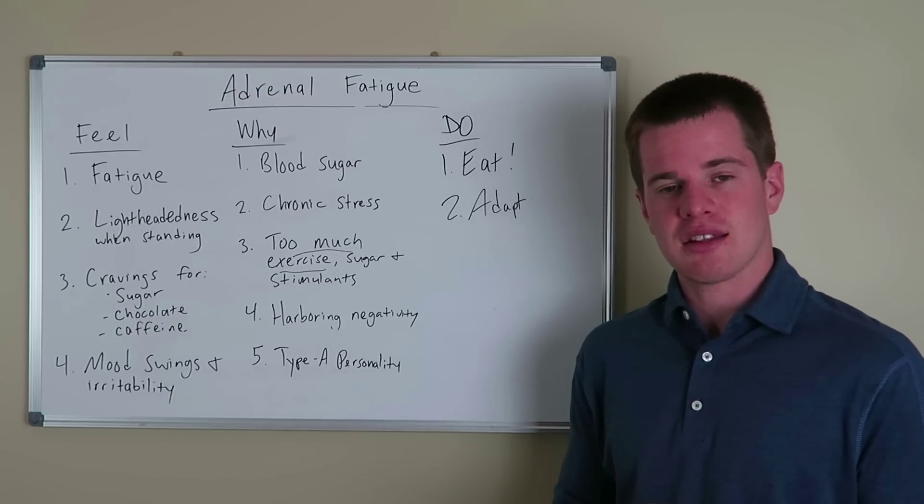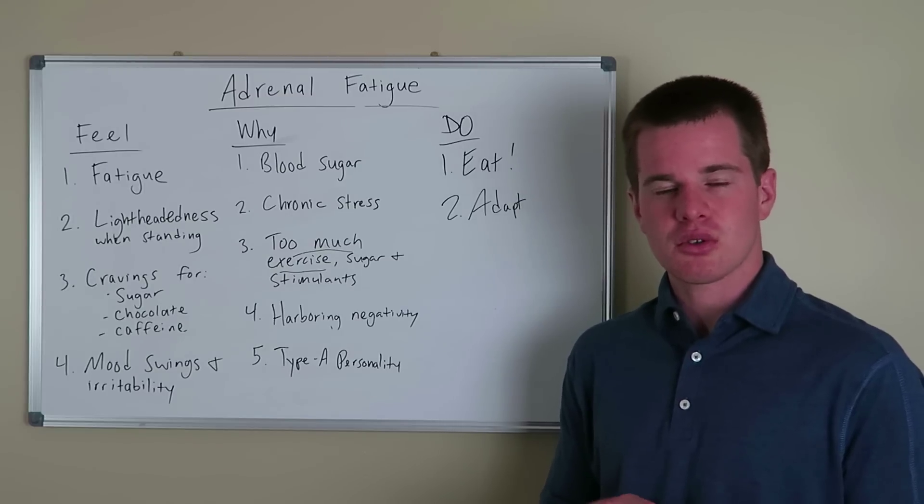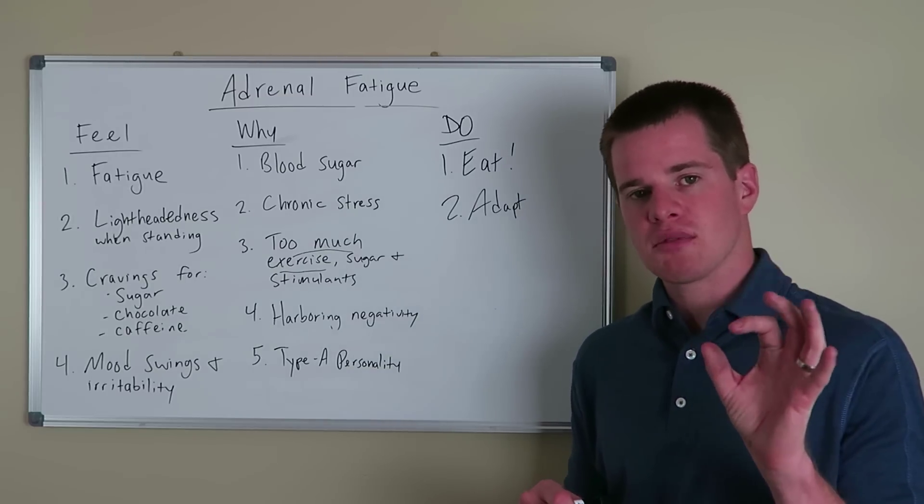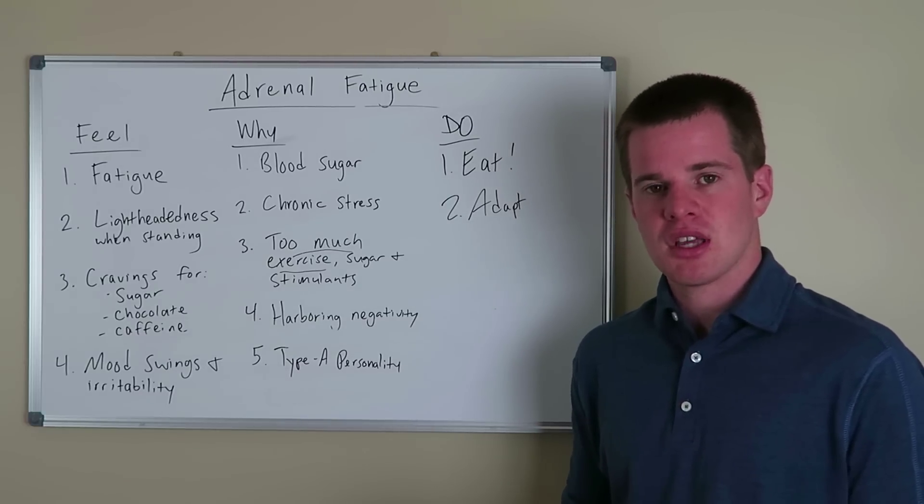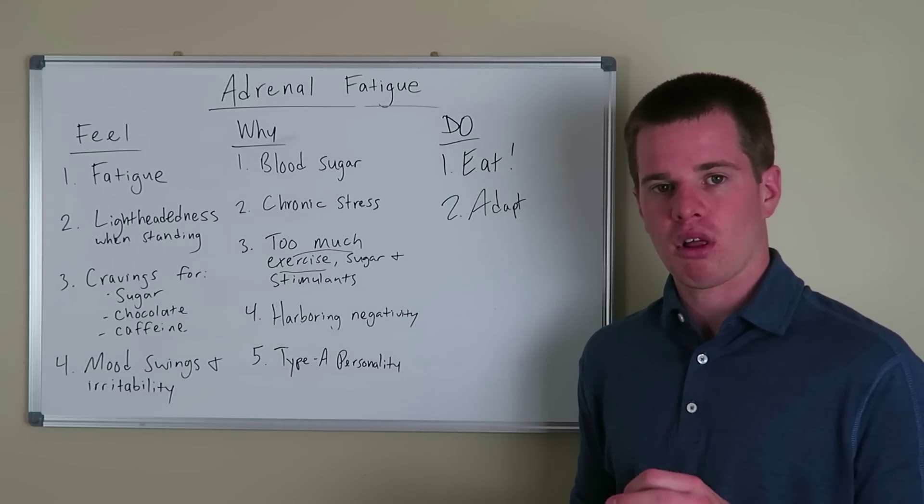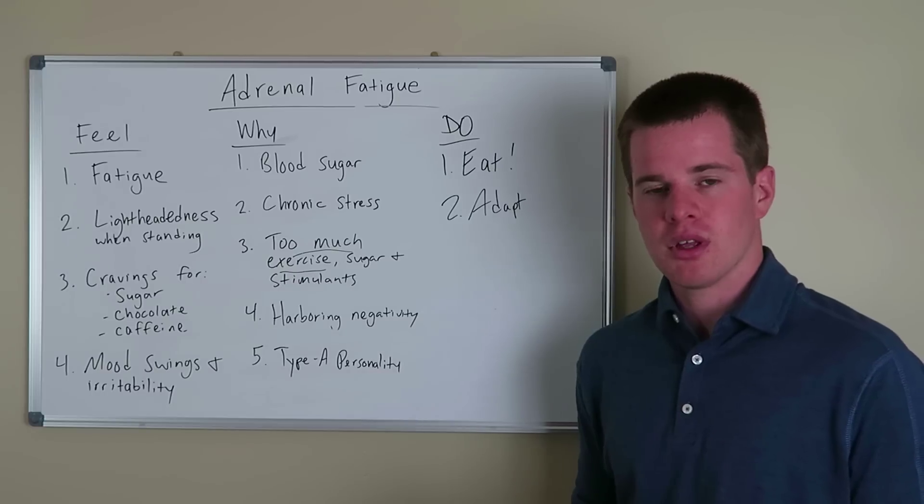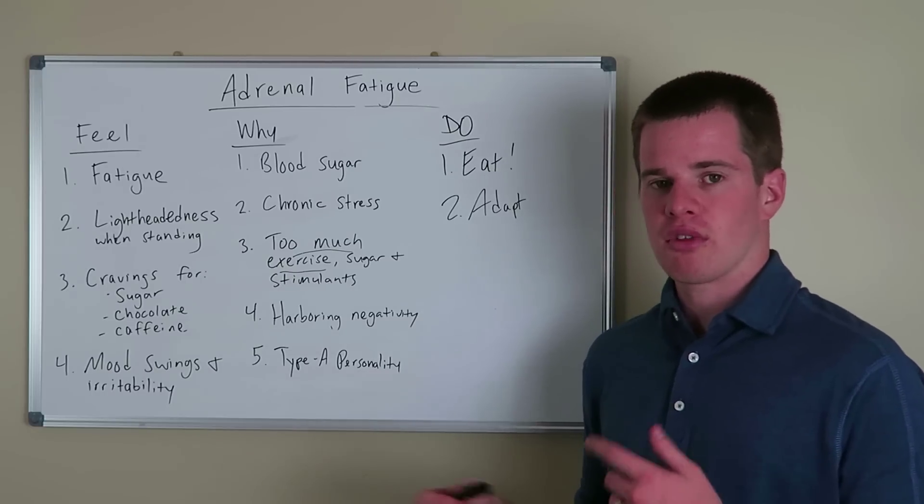Rhodiola has a mild antidepressant effect. It's also known as the golden root. It typically comes in about 500 mg capsules. Ashwagandha typically comes in 500 mg. You definitely want to look for high quality organic when possible. That's something that can be used in the morning or the evening.